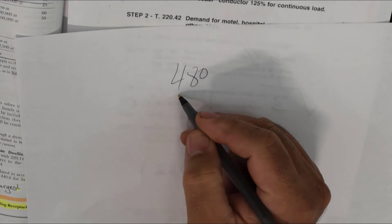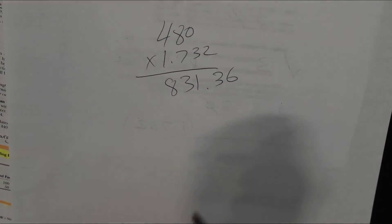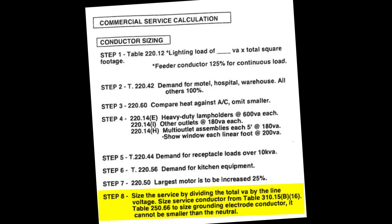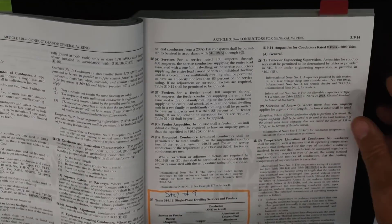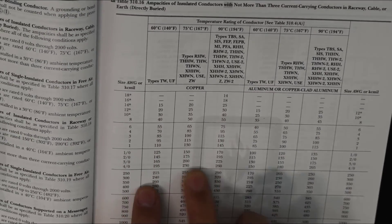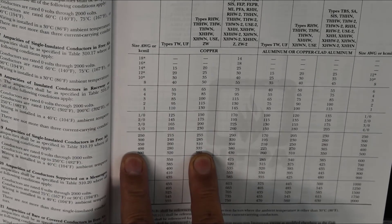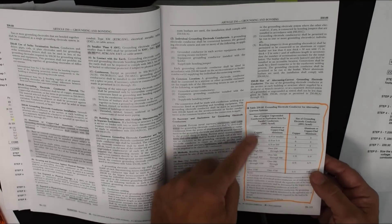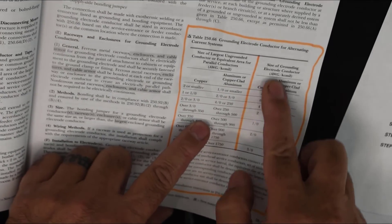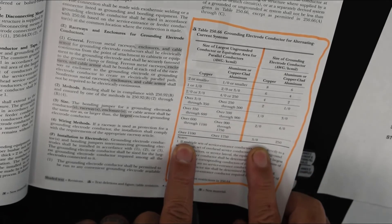For a 480-volt three-phase system, 480 times 1.732 equals 831.36, so you divide your total VA by 831.36. Once you determine the total load in amps, go to Table 310.16 and size the service conductors using the 75-degree Celsius column — whatever ampacity you calculate, that determines the wire size. Once you have the service conductor size, go to 250.66 to determine the grounding electrode conductor size. Note that the largest grounding electrode conductor required by the NEC is a 3/0, applicable when your service conductor exceeds 1,100 kcmil.